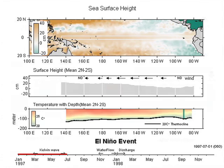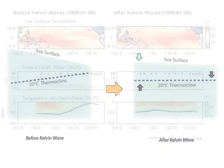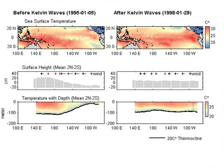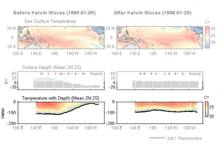Sea surface height and the depth of the 20 degrees Celsius thermocline before and after the Kelvin wave propagates through are different. The left panels describe conditions before the Kelvin wave, and the right panel describes conditions after the Kelvin wave. Both sea surface and thermocline slopes become flattened after the Kelvin wave passes. The flattening of the sea surface height is shown in the second panel, and flattening of the 20 degrees Celsius thermocline is shown in the third panel.